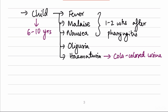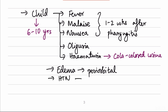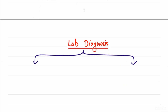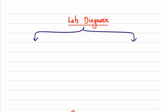Additional findings include mild edema, usually in the periorbital region since renal edema typically starts there, and mild to moderate hypertension — not severe. In adults, the presentation is atypical and usually in the form of hypertension; other features such as edema may or may not be present.